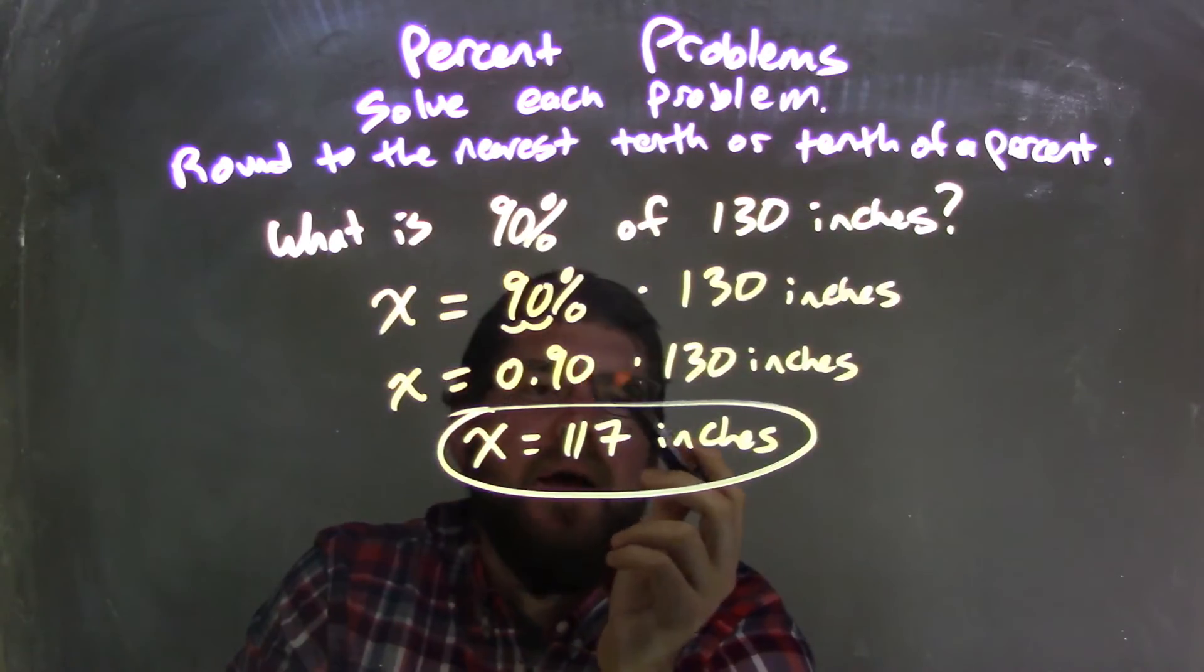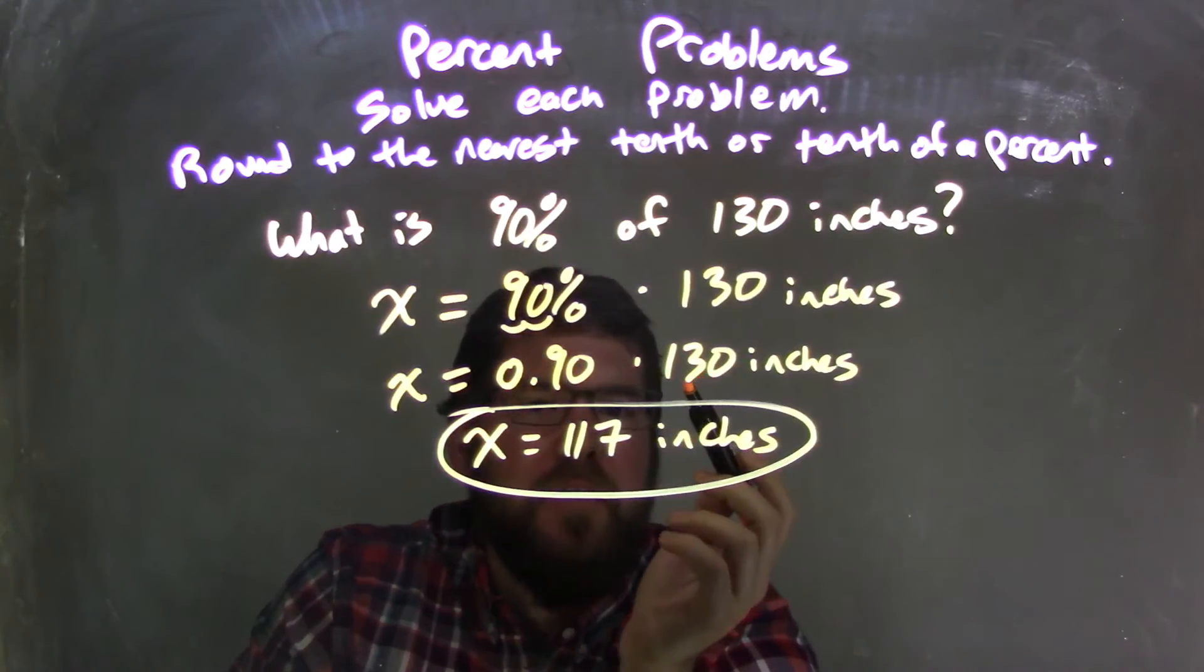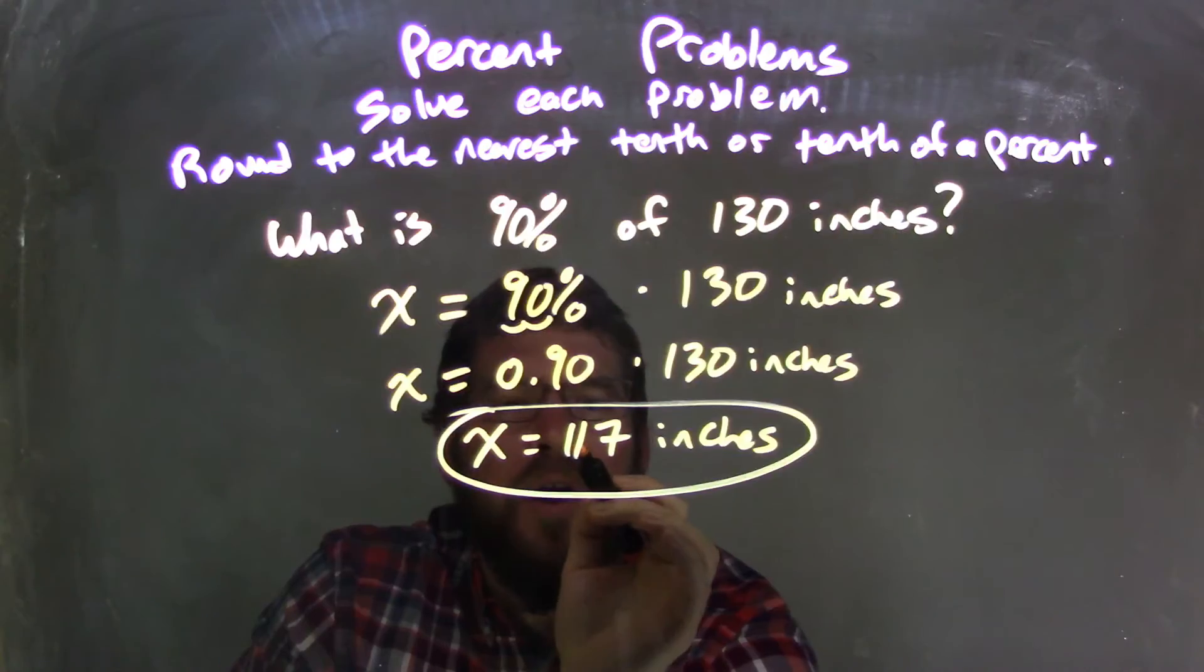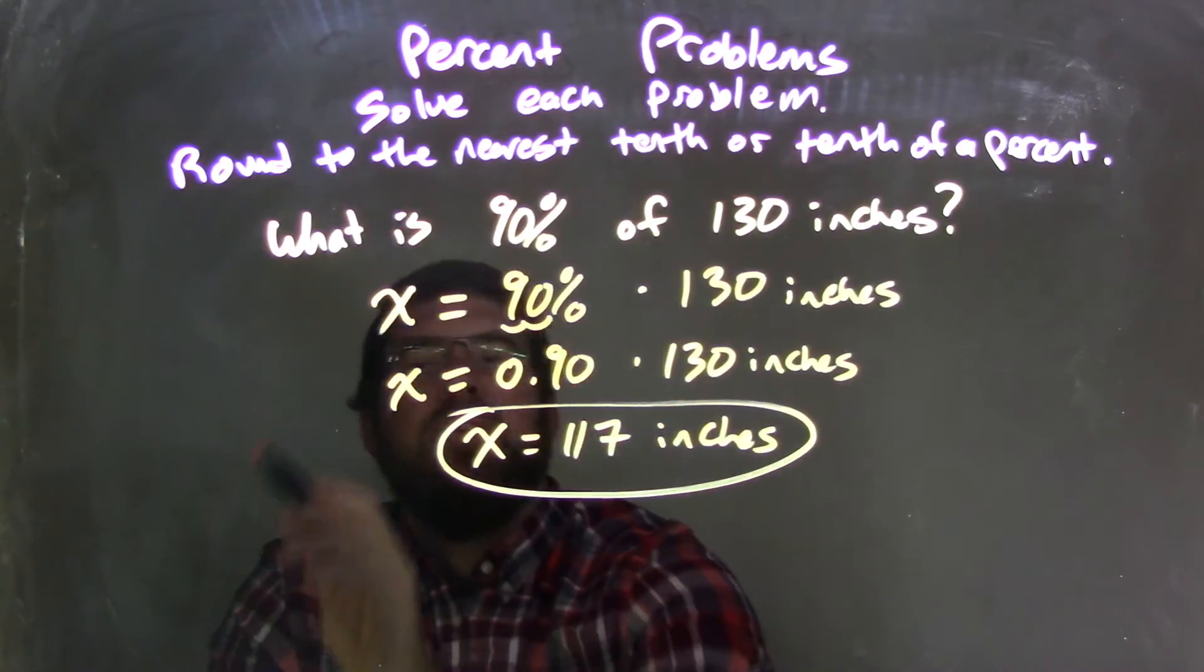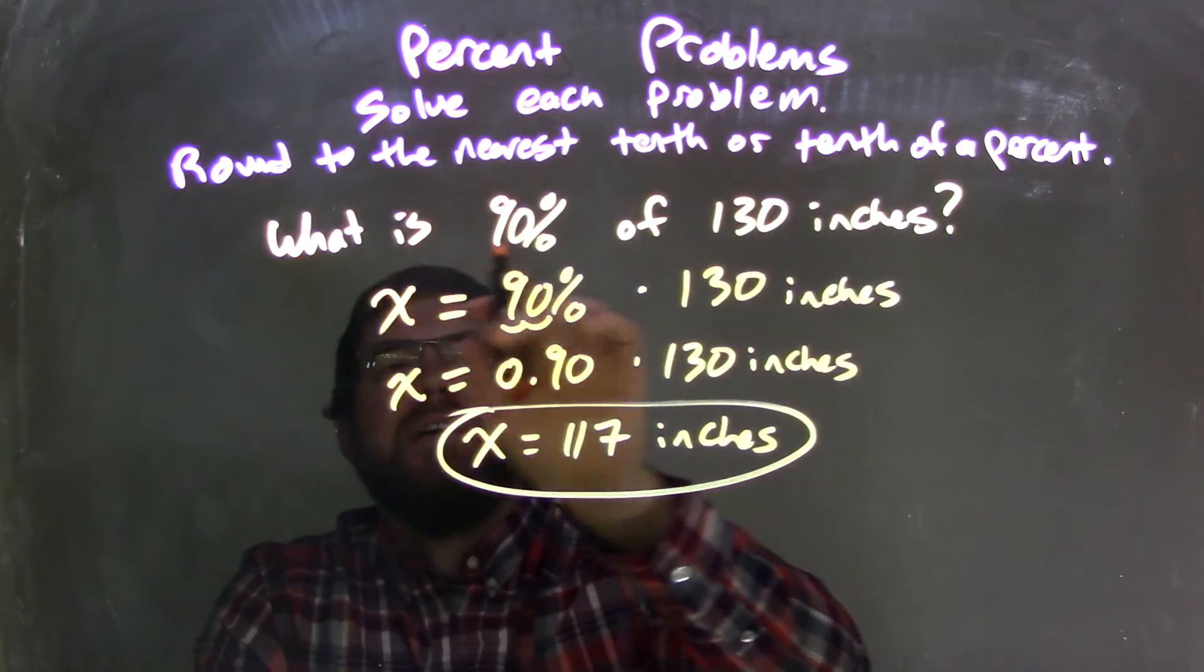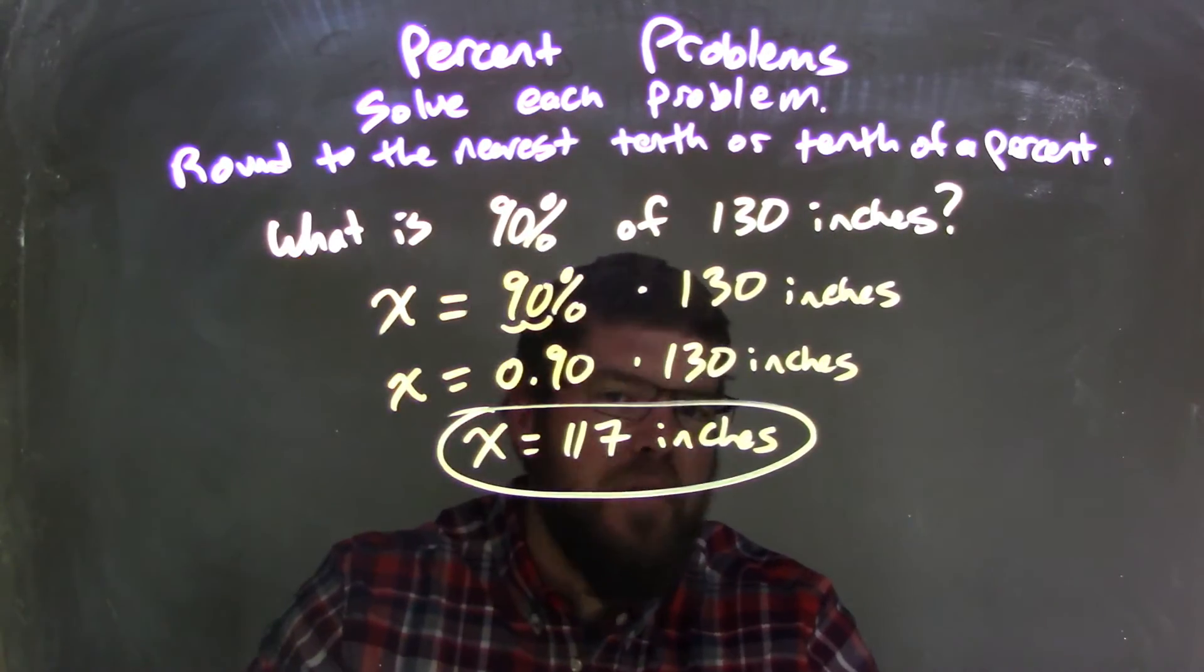0.90. And then I multiplied that by 130. I used my calculator—it gave me 117. So we have a final answer of X equals 117 inches. And that answers the question here: 117 inches is 90% of 130 inches.